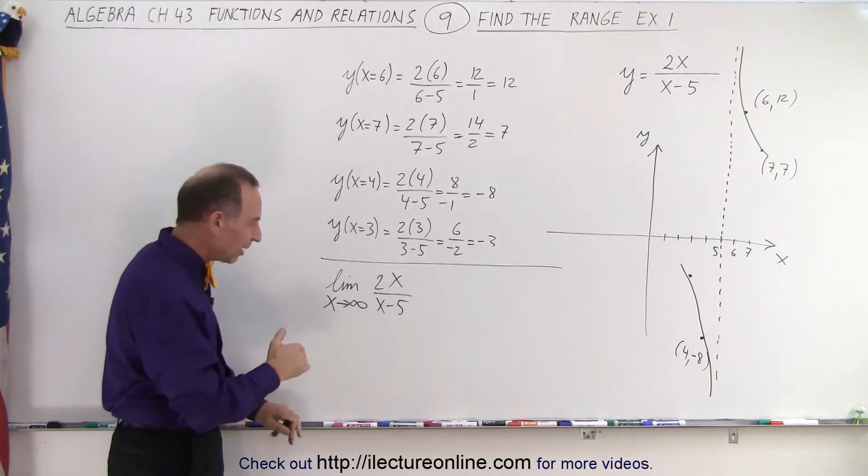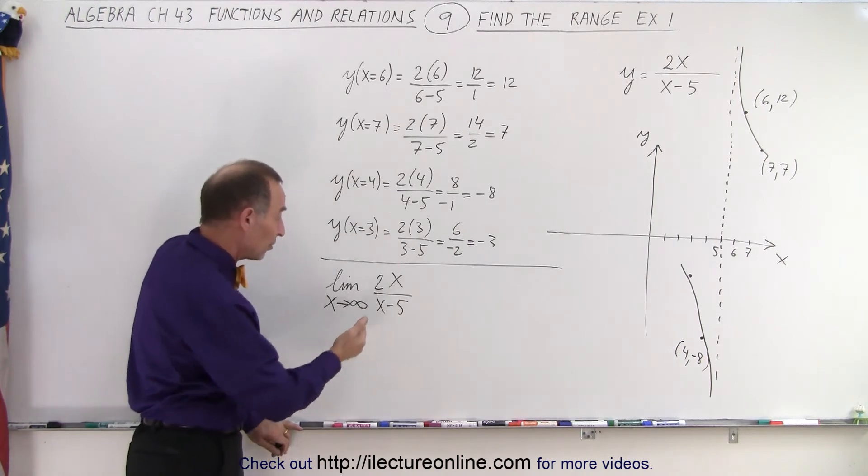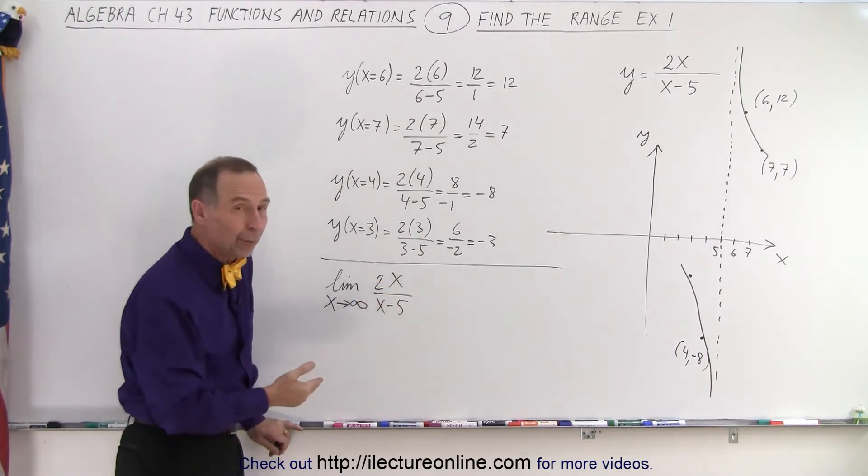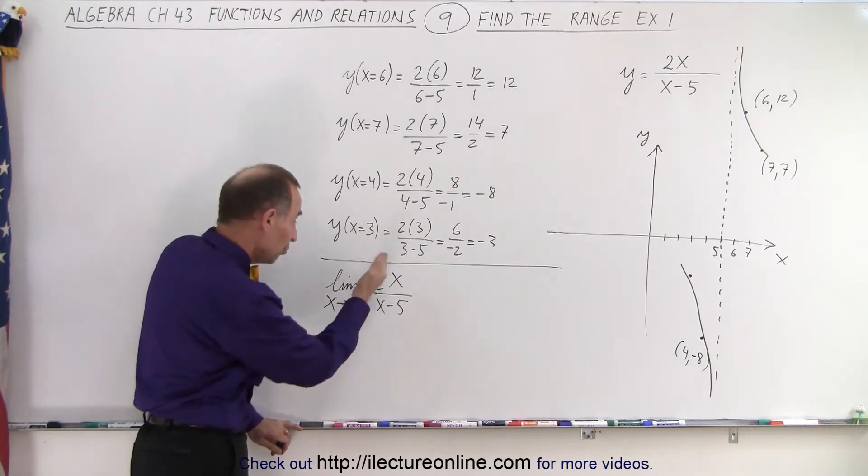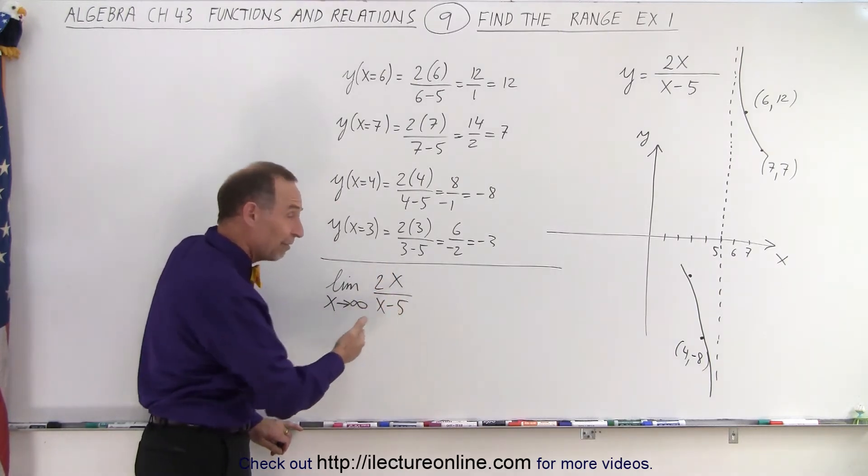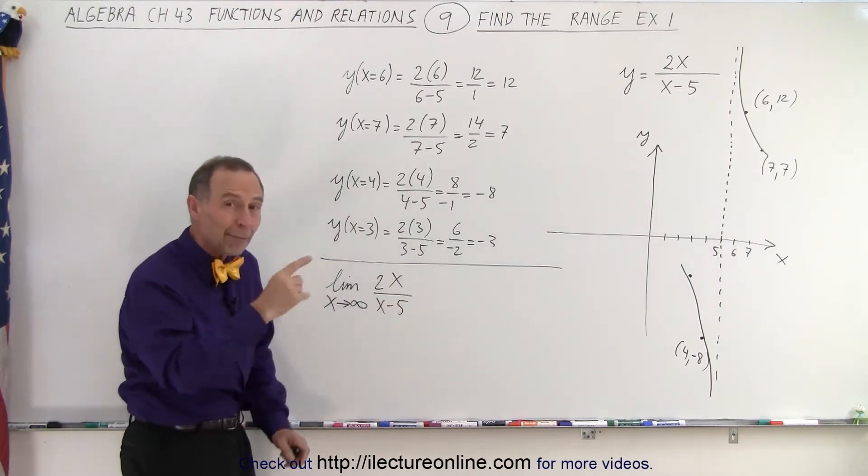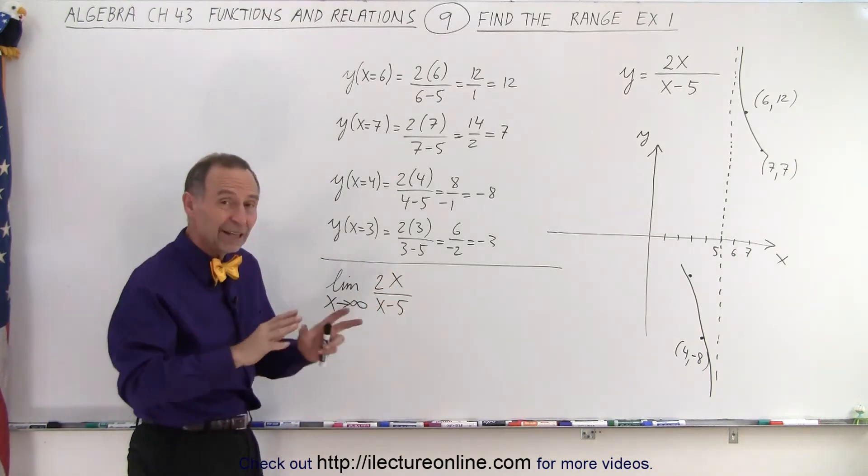We're going to put in really big values of the quantity 2x over x minus 5. So what I'm claiming here is when x becomes really big, let's say 1,000, we get 2,000 divided by 1,000 minus 5. What if x becomes 1,000,000? 2,000,000 divided by 1,000,000 minus 5. How about 1,000,000,000? 2,000,000,000 divided by 1,000,000,000 minus 5.